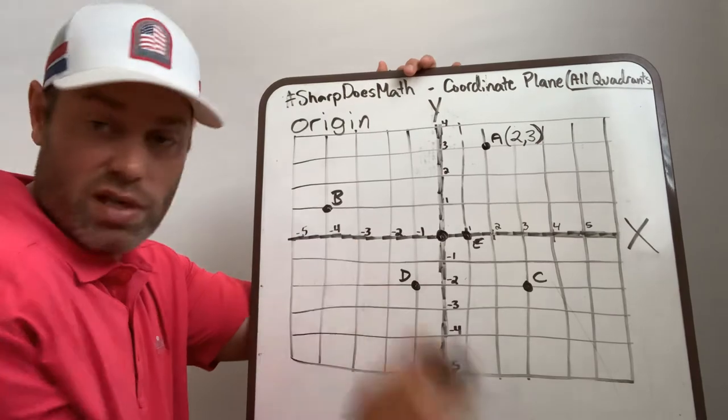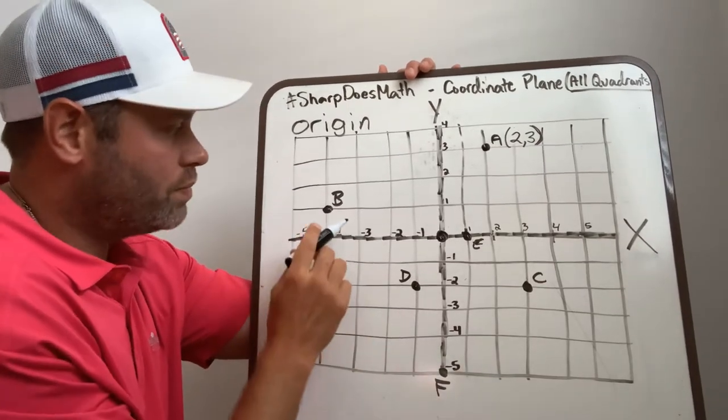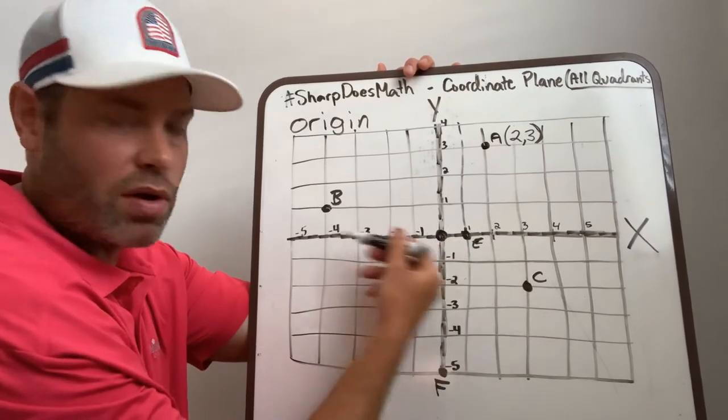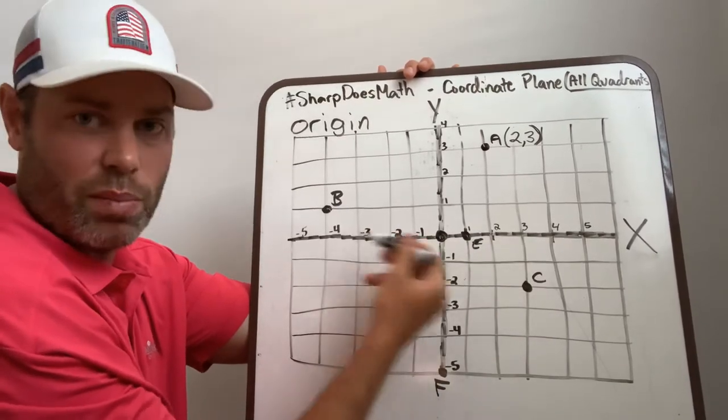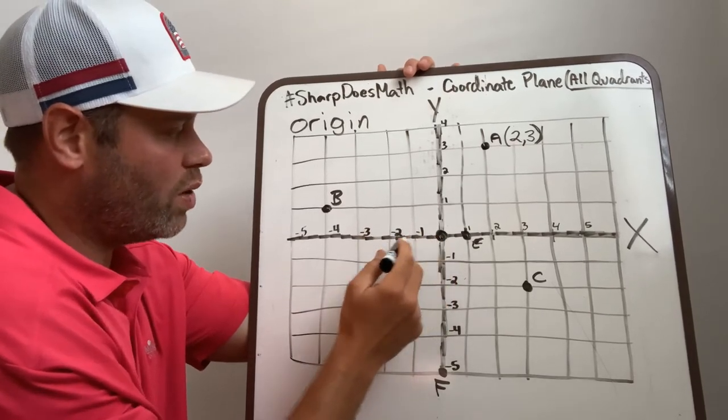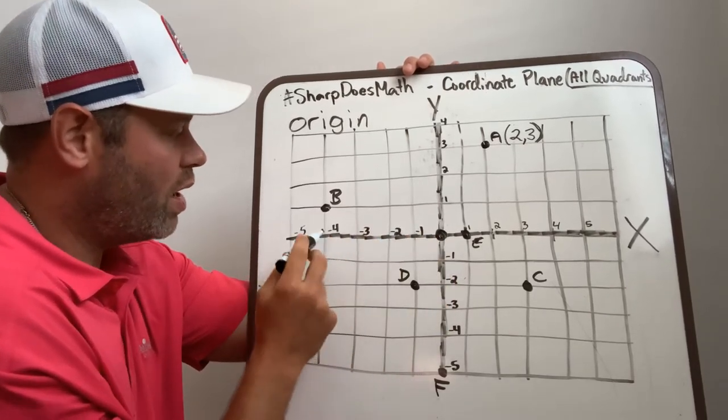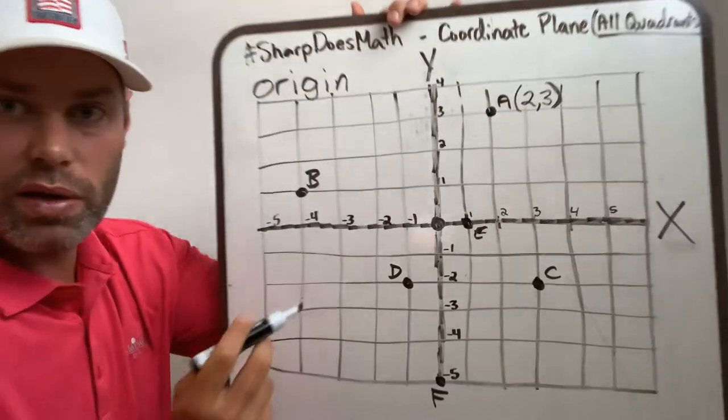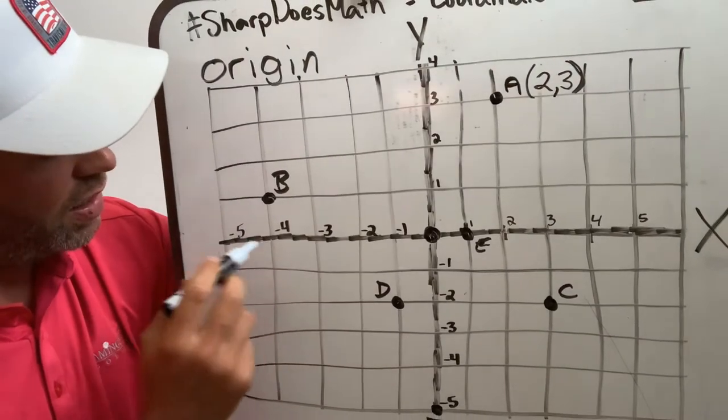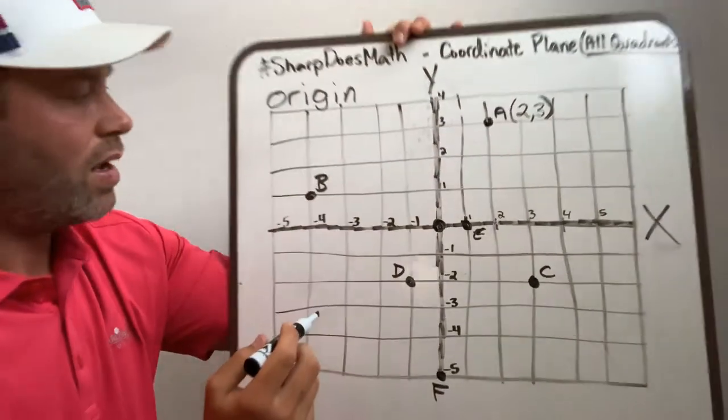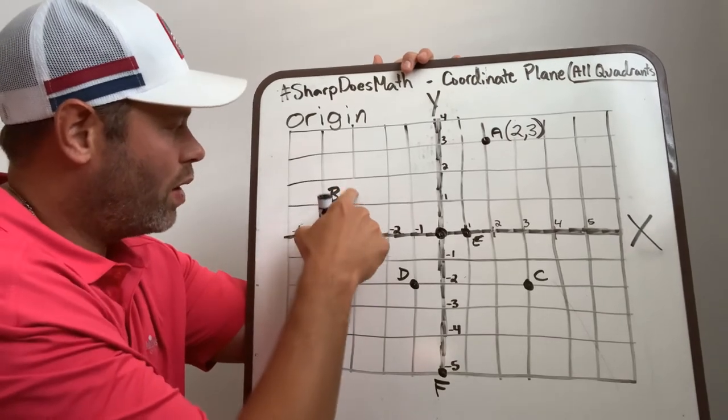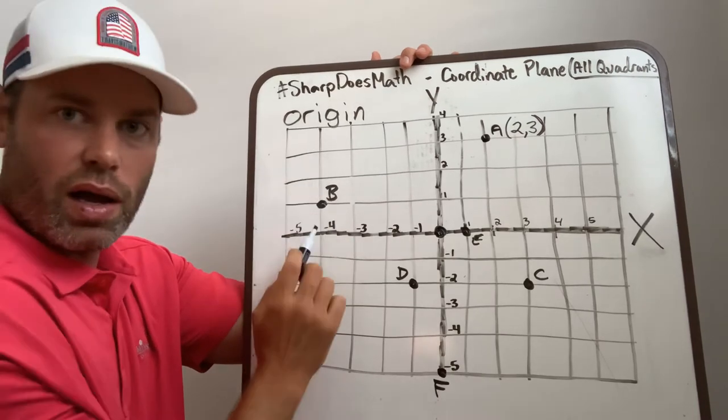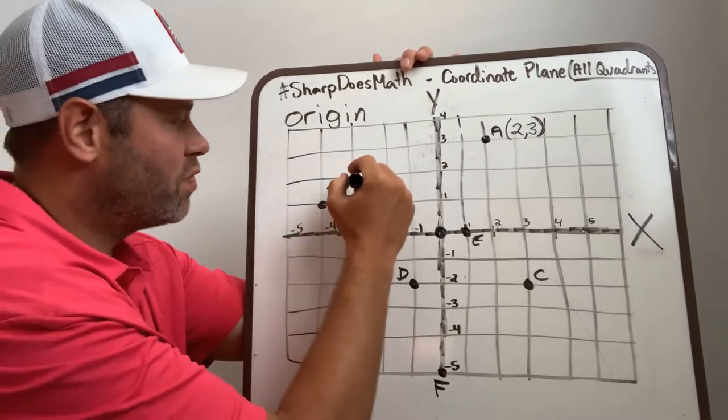Now you'll see how that's different with B. I'm starting at my origin, but now I'm going into the negative numbers on the x-axis. Negative 1, 2, 3. I'm at negative 4 here. So I'm at negative 4, and then I go up to positive 1. When I go up on the y-axis, we're going positive.